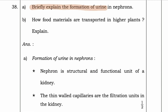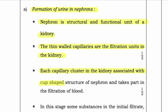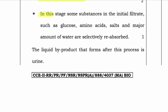Briefly explain the formation of urine in nephrons. Nephron is the structural and functional unit of a kidney. The thin-walled capillaries are filtration units in the kidney. Each capillary cluster in the kidney is associated with a cup-shaped structure of the nephron and takes part in the filtration of blood. In this stage, some substances in the initial filtrate such as glucose, amino acids, salt and a major amount of water are selectively reabsorbed. The liquid by-product that forms after this process is urine.